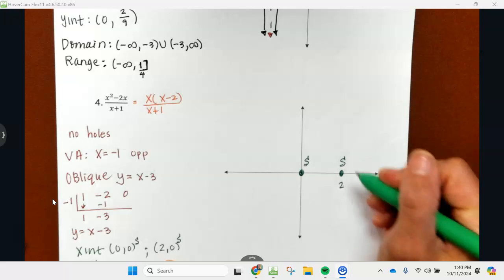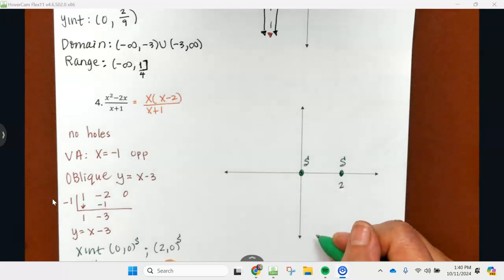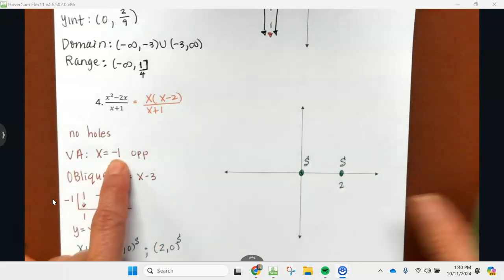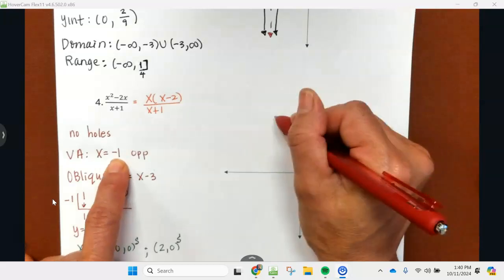We have a vertical asymptote at negative one. Red pen time. Here's negative one, and negative one is going to be labeled.